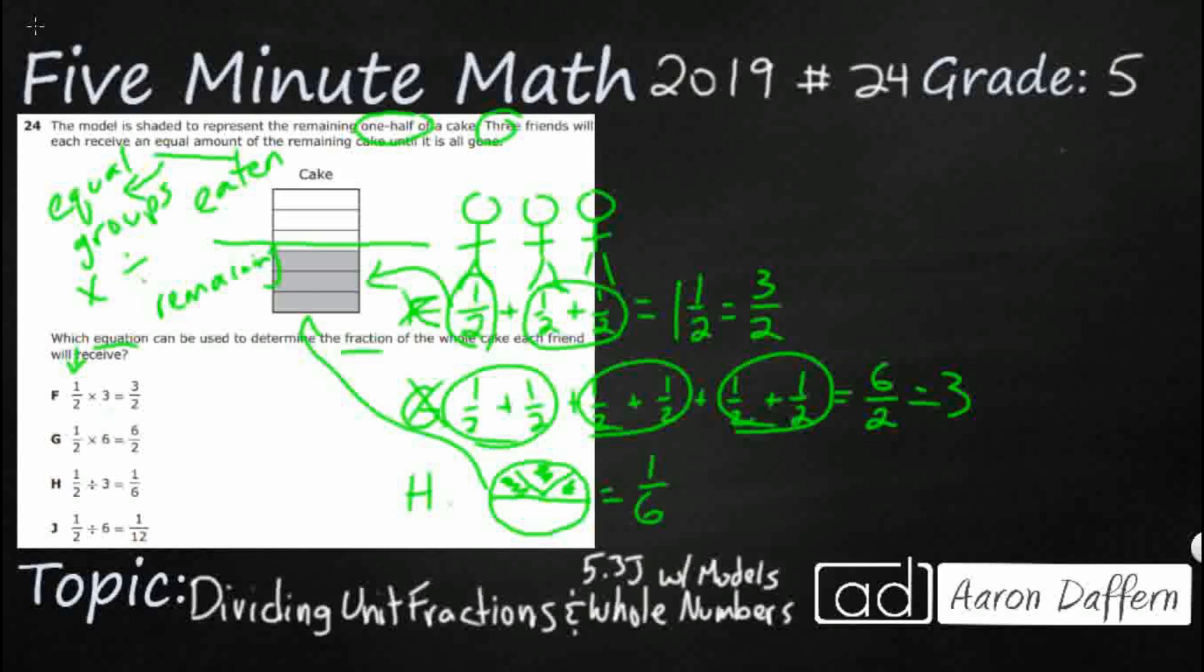So, that means that each person gets one sixth of the cake. And you know what? That looks like that's what they did up here. One sixth plus one sixth plus one sixth. That equals three sixths. And three sixths equals one half. So, that's looking good. Let's check J.